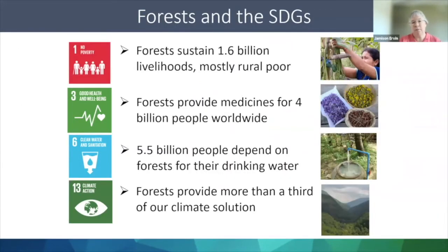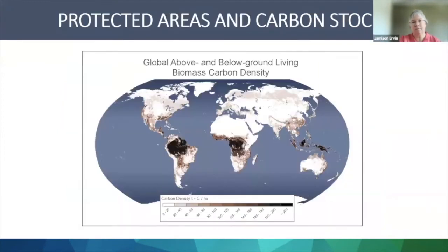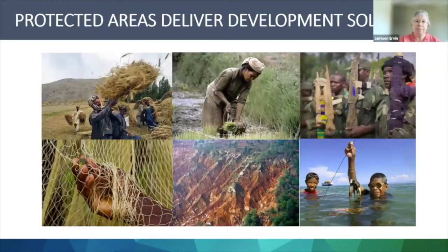Forests and the SDGs sustain 1.6 billion livelihoods, mostly rural poor. They provide medicines for four billion people worldwide, drinking water for 5.5 billion people, and they are more than a third of our climate solution. When we think of oceans, fisheries, and the SDGs, oceans sustain 1.6 billion livelihoods, mostly rural poor. They supply more than four billion people with more than 15% of their annual protein and support women's livelihoods — women are 60% of the fisheries workforce in India and 80% in West Africa. Oceans also sequester a third of all our carbon emissions. Protected areas are essential for keeping carbon in the ground. In short, protected areas deliver effective, sustainable development solutions.